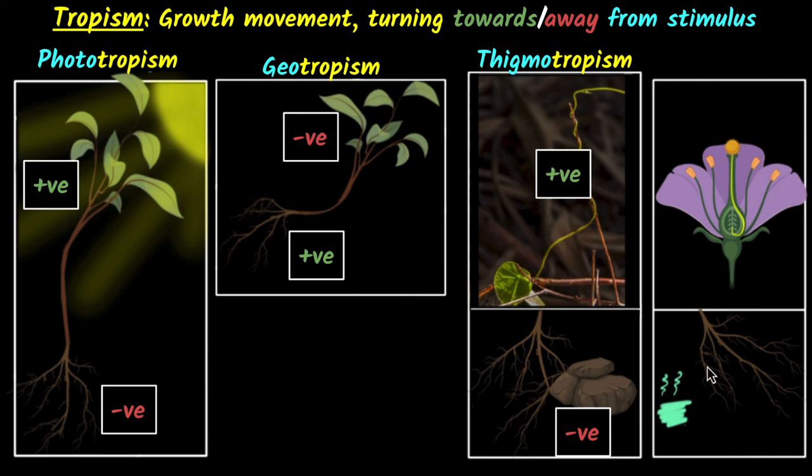Another example over here is sometimes the roots will turn away from some harmful chemicals inside the soil. Again tropism, turning. Since here tropism is happening due to chemicals, this is called chemotropism.